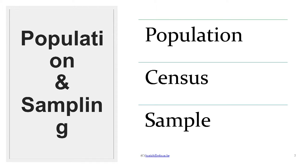Let's look at population, sampling, and census — the key concepts for today's lesson. What is a population? What is census? What is a sample? And why must you consider each of them? Population is simply the total number of elements that a particular research study wants to focus on.